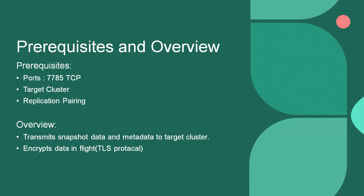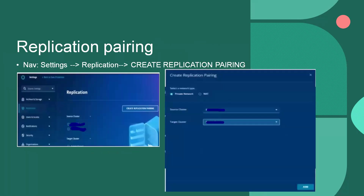To create a replication pairing, navigate to Settings > Replication > Create Replication Pairing. Once we click on replication pairing, we will get an option to select the network type and the source and target clusters. Once we select all three, we can add the replication pairing.